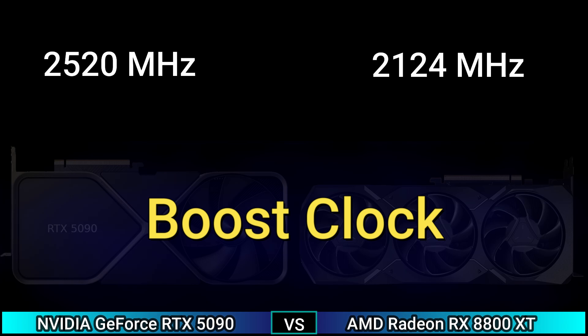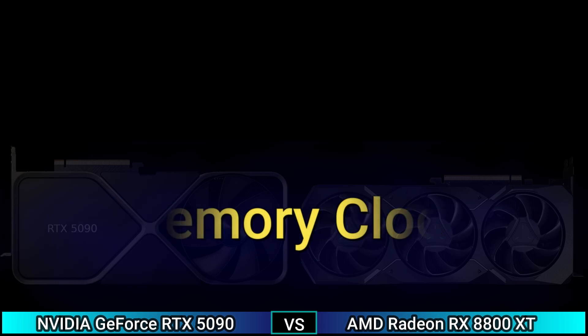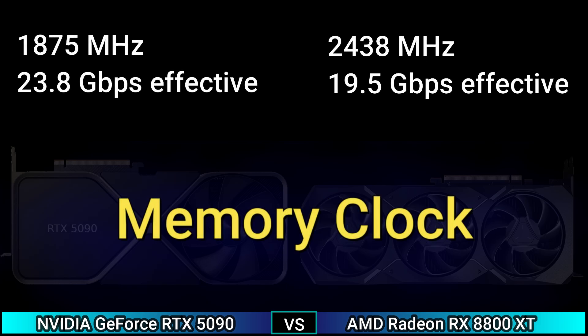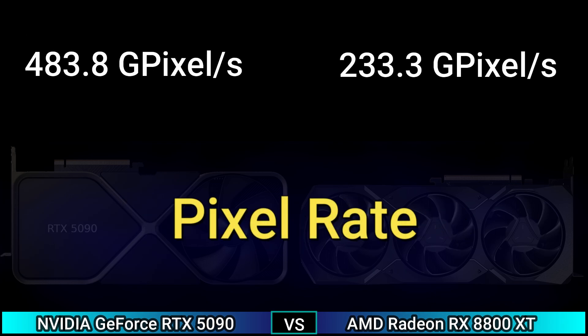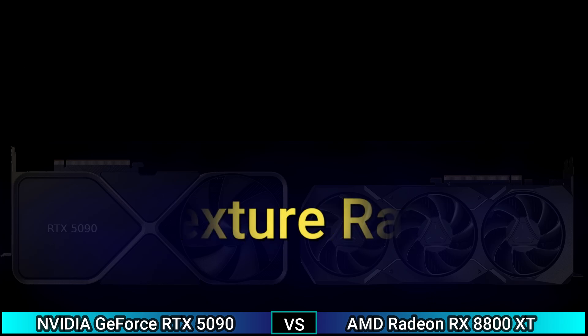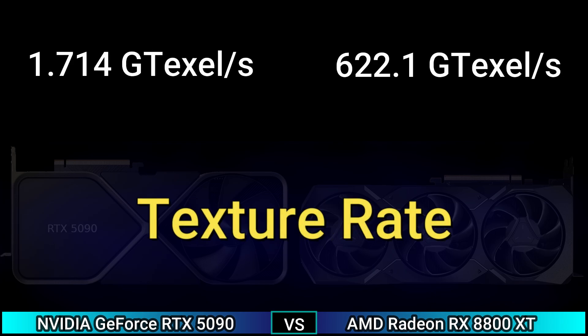Performance: base clock 2235 MHz and 1295 MHz. Boost clock 2520 MHz and 2124 MHz. Memory clock 1875 MHz (23.8 Gbps effective) and 2438 MHz (19.5 Gbps effective). Pixel rate 483.8 Gpixel/s and 233.3 Gpixel/s. Texture rate 1714 Gtexel/s and 622.1 Gtexel/s.